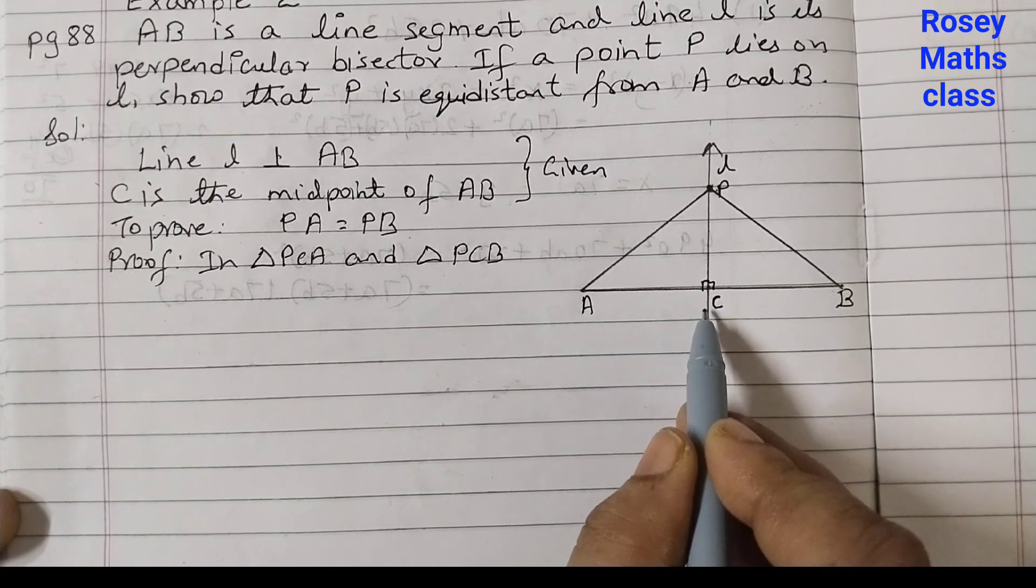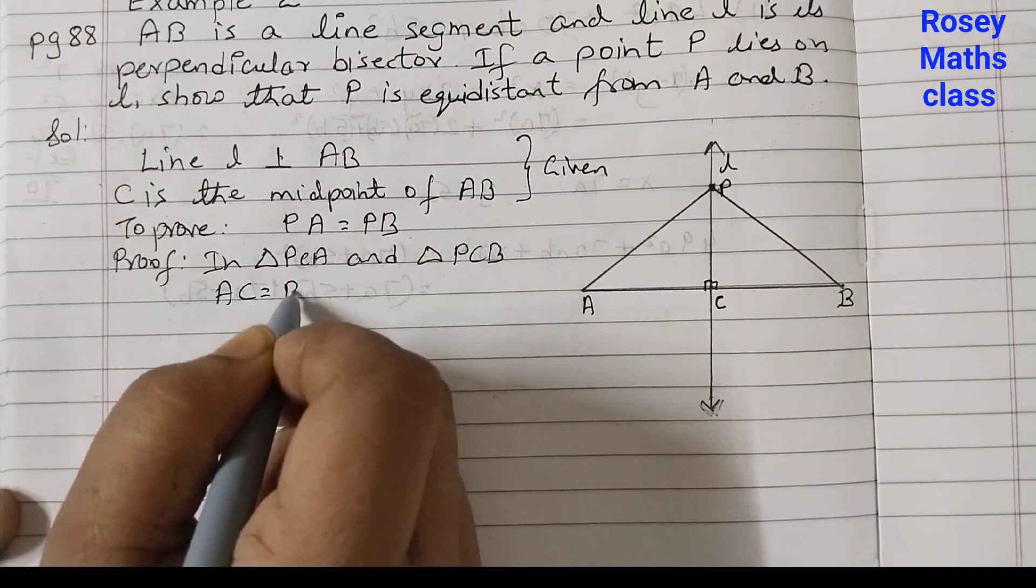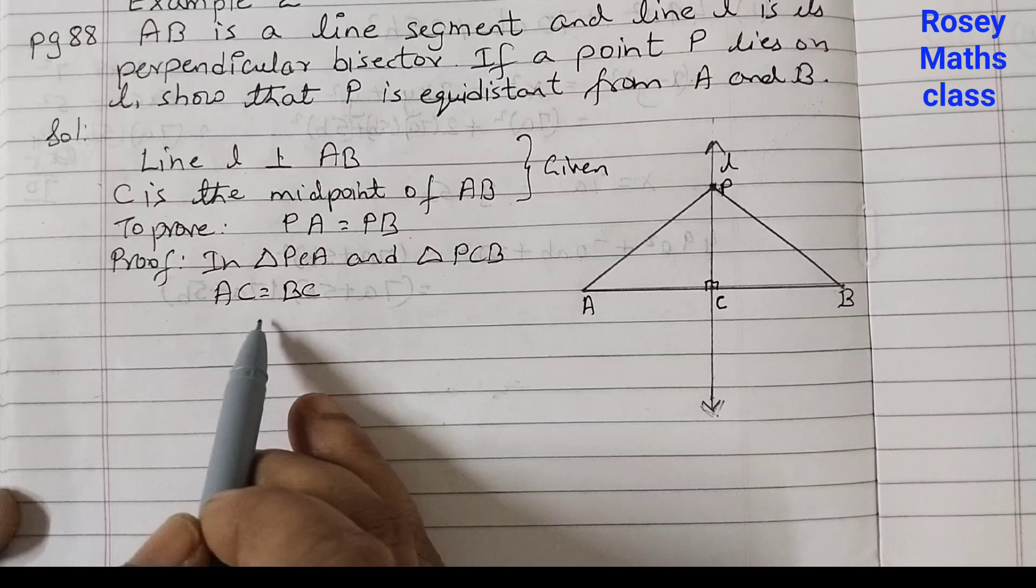AC is equal to BC. Because it is given that C is the midpoint. So AC is equal to BC.